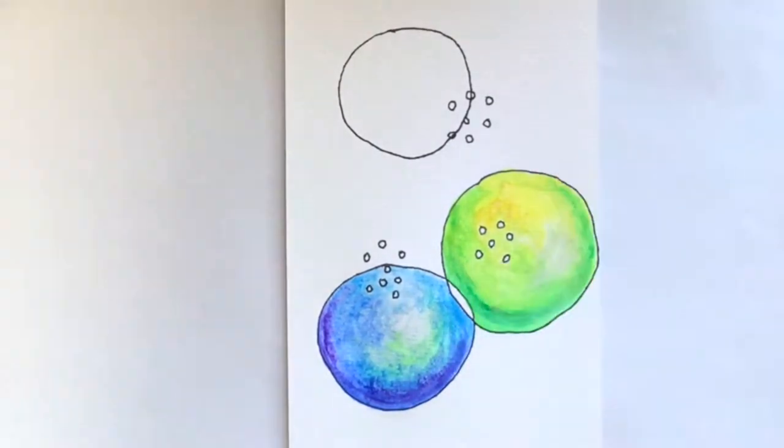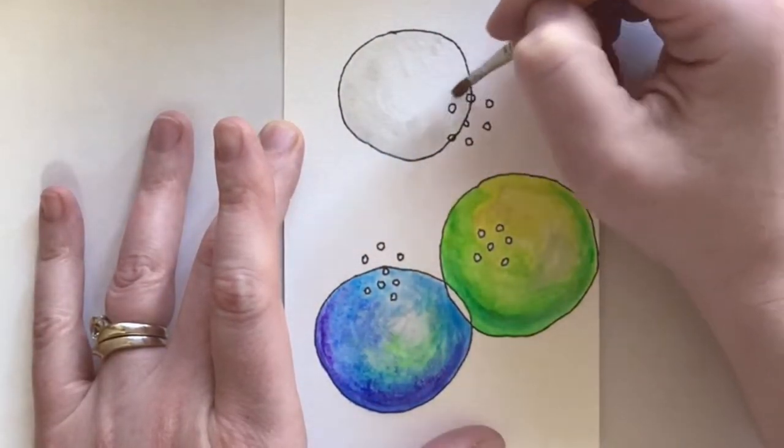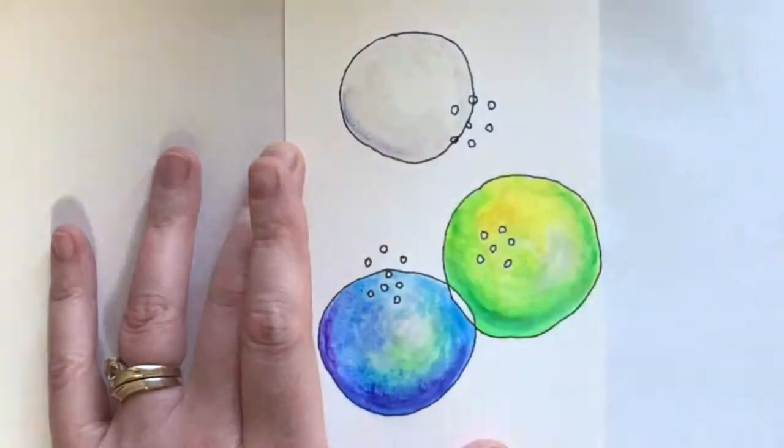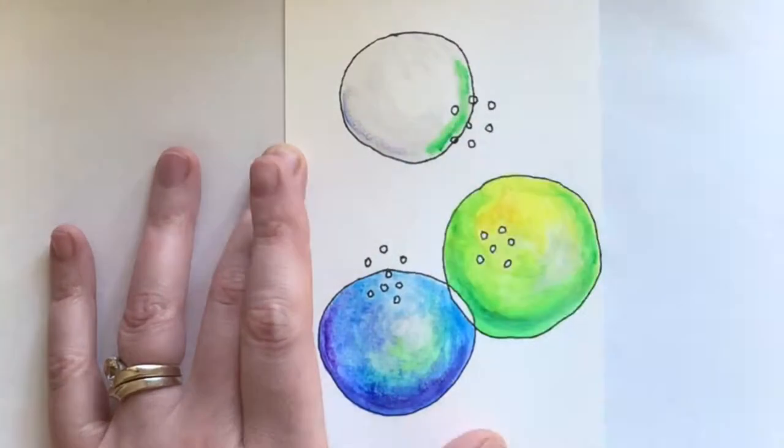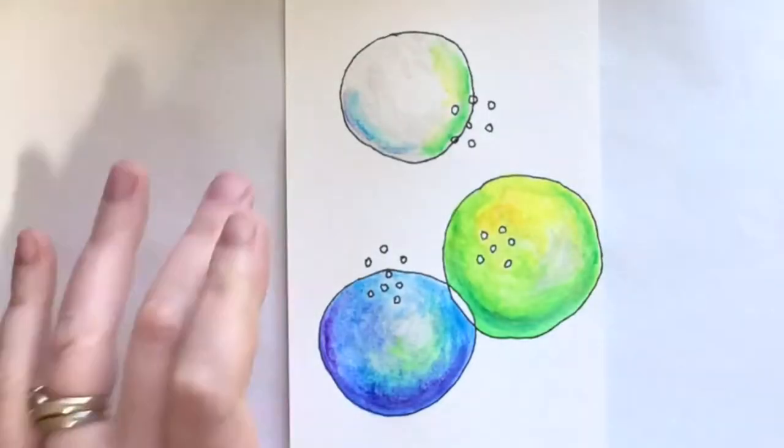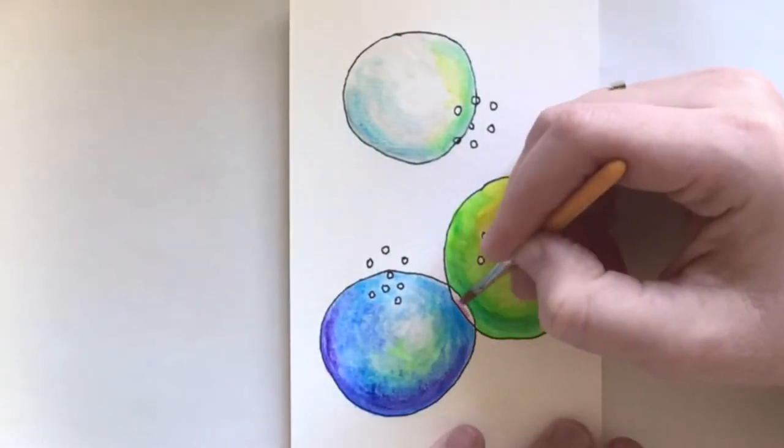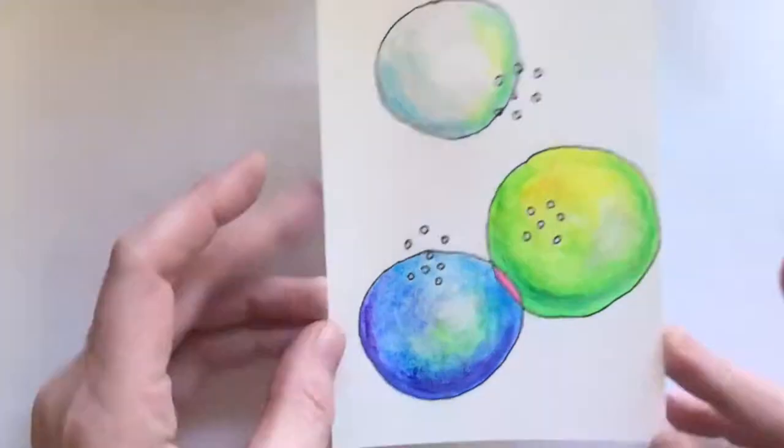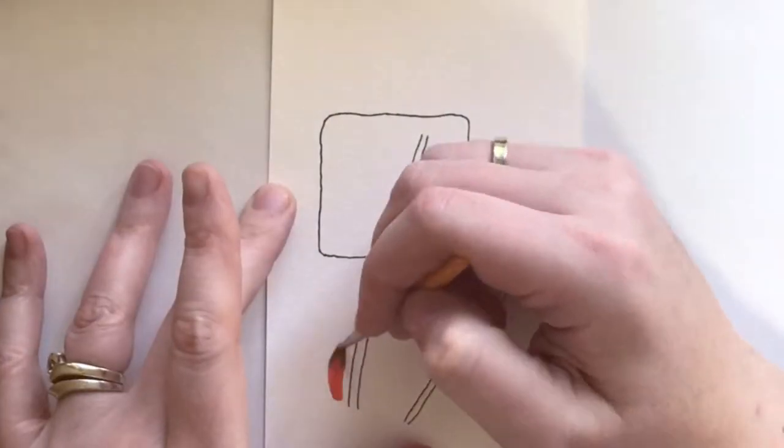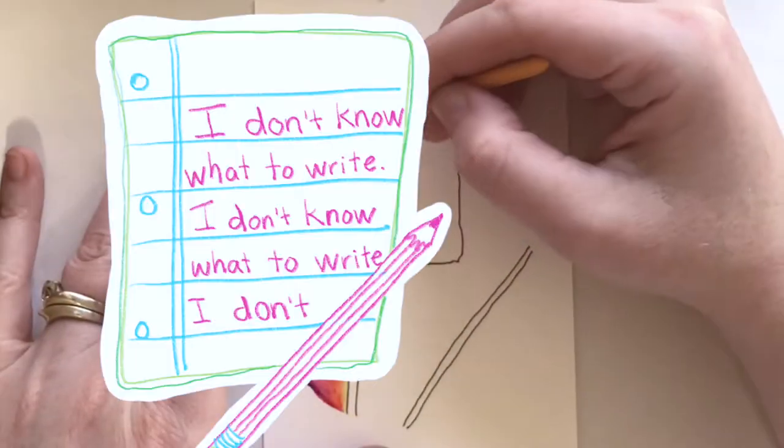It's kind of like morning pages, a creative tool where you sit down and fill three whole pages with anything you can think of. It's handwritten stream of consciousness—it could be your grocery list, to-do list, things on your chest, or just writing over and over 'I don't know what to write,' but you have to fill three pages.